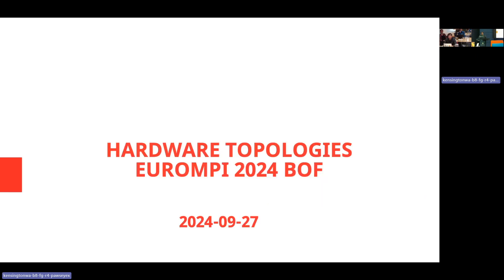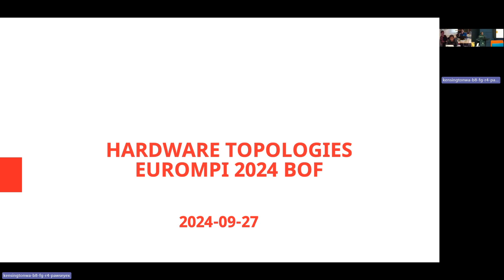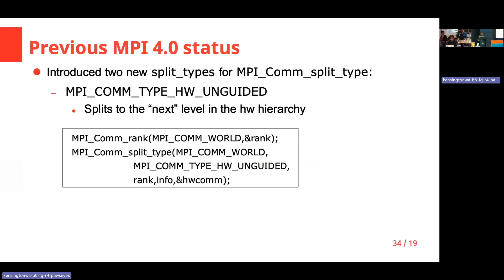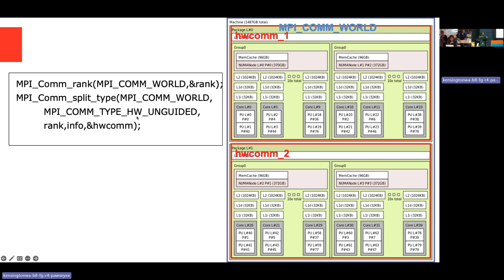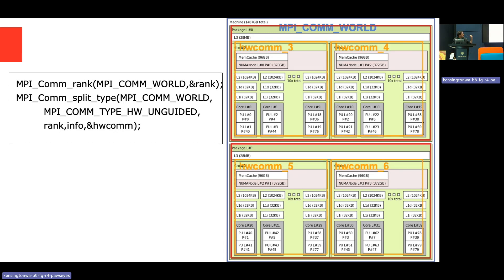I'm Hugo Taboada from CEA. I'll speak about the Hardware Topologies working group, which is led by Guillaume Mercier in France. In MPI 4.0 we introduced MPI_Comm_split with MPI_Comm_type_hardware_unguided. It's quite simple: you have the hardware as seen by hwloc, you have your communicator, you split it with MPI_unguided and you get the next topology level. For example, you have the whole node; the first split gives you the two NUMA nodes; if you re-split, you get the cores within NUMA nodes, and so on.